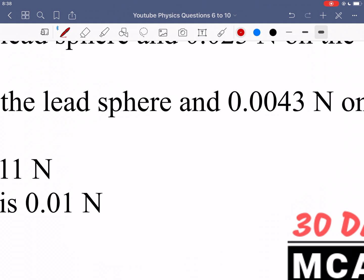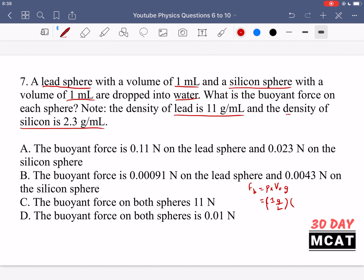And so the buoyant force is going to be the density of the liquid times the volume of the object times G, which is gravity. So in this case, we have water. So density is 1 gram per liter. Our volume for both objects was 1 milliliter. Therefore, we can write 0.001 liter.